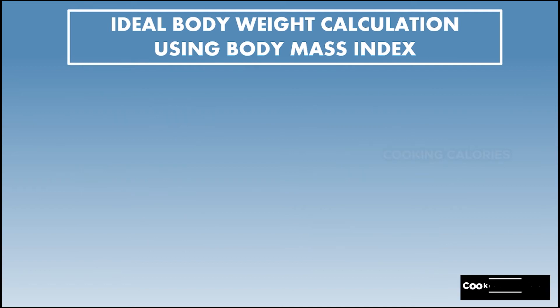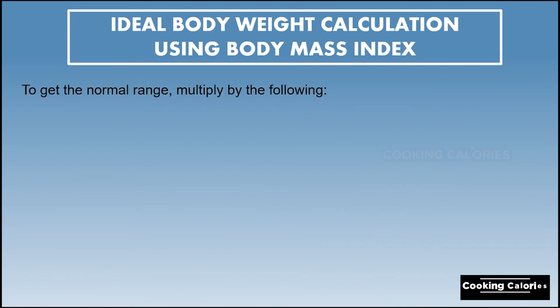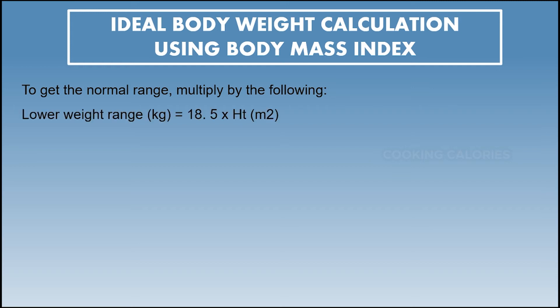Next, I will teach you how to get the ideal body weight range. An ideal body weight range is the weight that a person needs to maintain to lower the risk of diseases like diabetes mellitus, cardiovascular diseases, and others. To get the lower weight range, multiply the height in meters squared by 18.5.